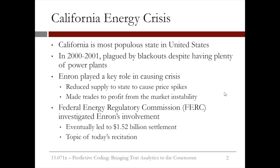While Enron's collapse stemmed largely from accounting fraud, the firm also faced sanctions for its involvement in the California electricity crisis. California is the most populous state in the United States, and in 2000 to 2001, it had a number of power blackouts despite having sufficient generating capacity. It later surfaced that Enron played a key role in this energy crisis by artificially reducing power supply to spike prices and then making a profit from this market instability.